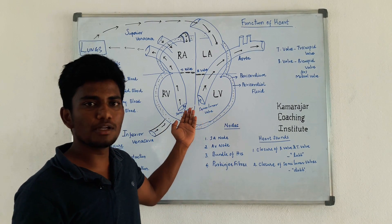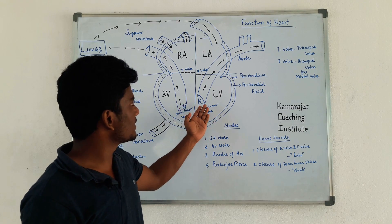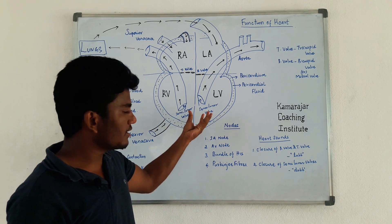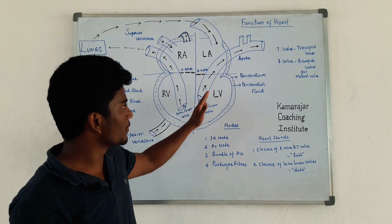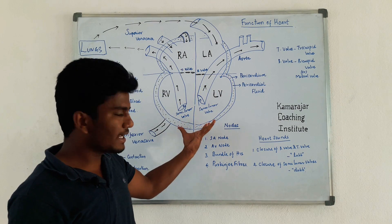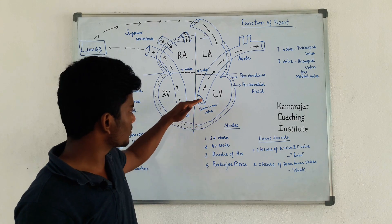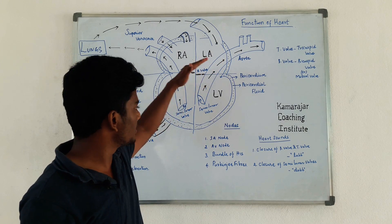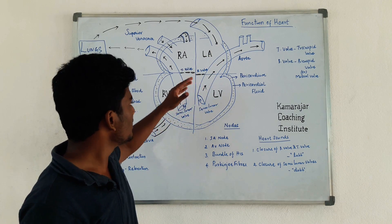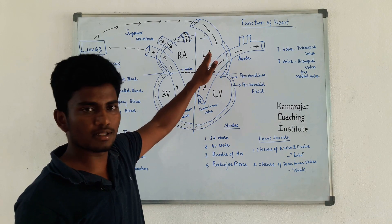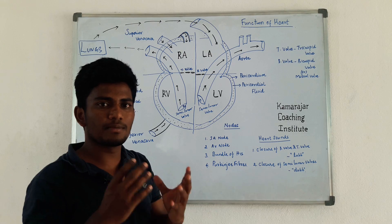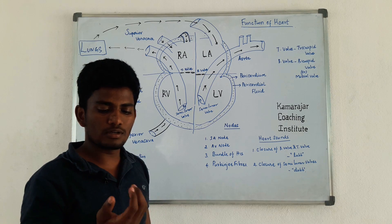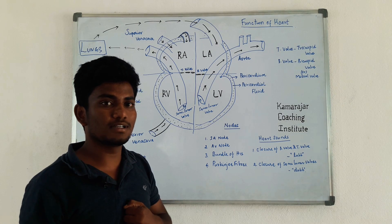We have a semi-lunar valve at the aorta and pulmonary artery. When the ventricle contracts, the blood moves out. During relaxation, the semi-lunar valve is closed. The lub-dub sound is produced by the valves — we can use the lub-dub sound to assess the heartbeat.